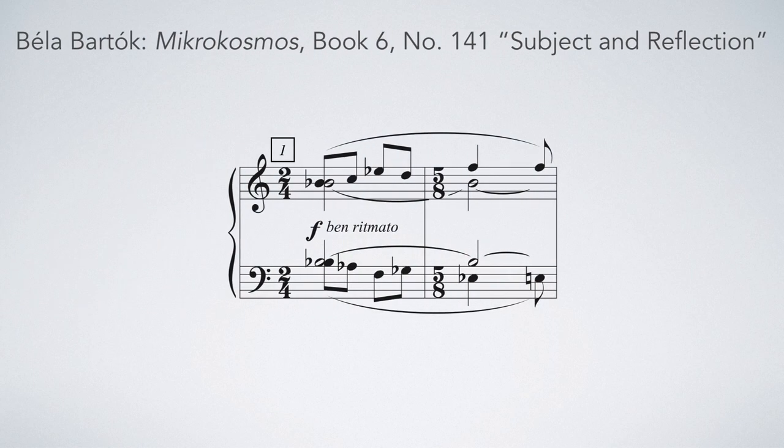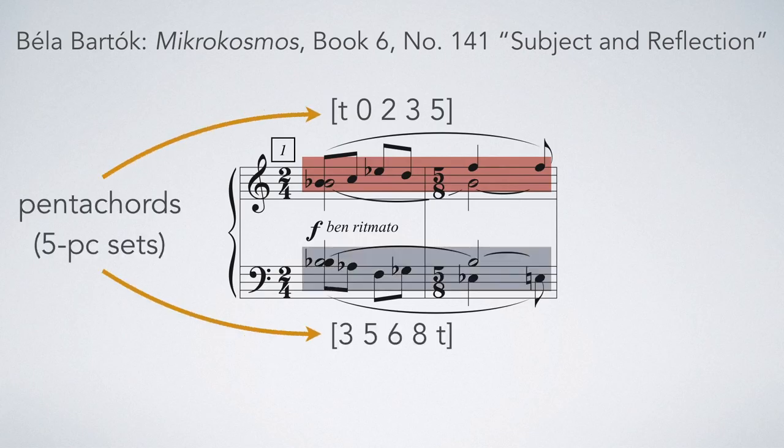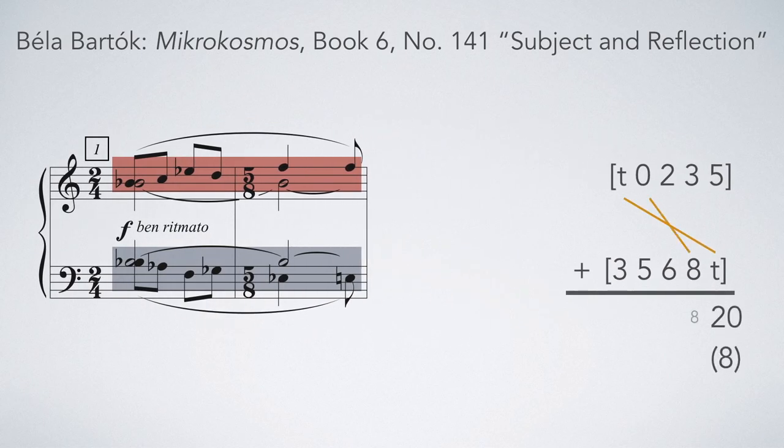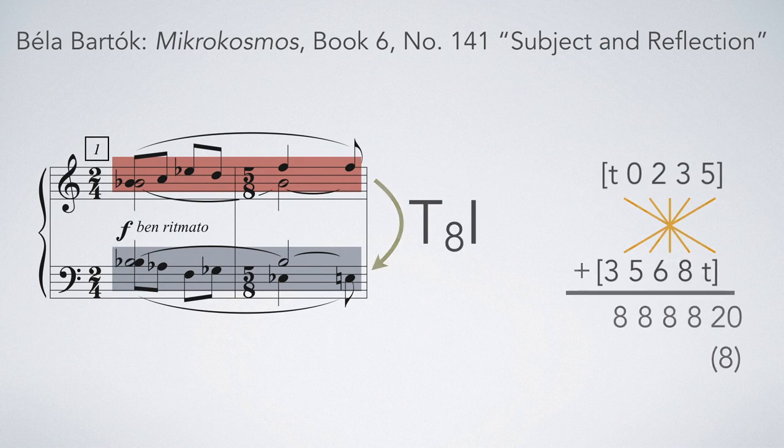As we've seen, one useful way of looking at a lot of post-tonal music is by studying the transpositional and inversional relationships between pitch class sets. In this short example from Bartók's Subject and Reflection, two seemingly different pentachords occur at the same time. If we do the math, we find that these are inversionally related by T8I.